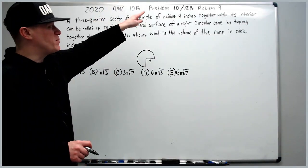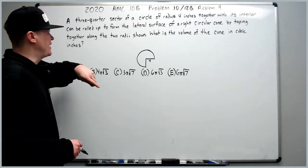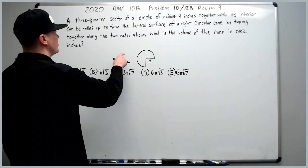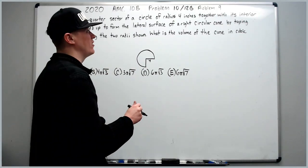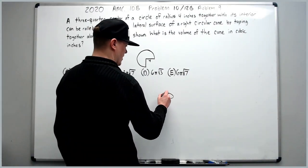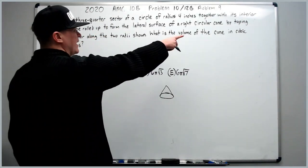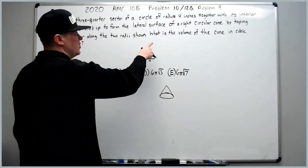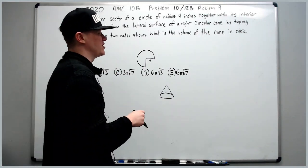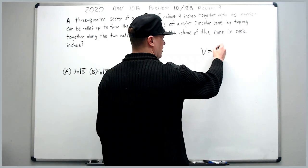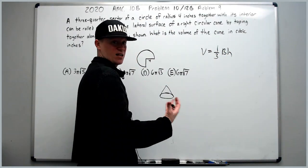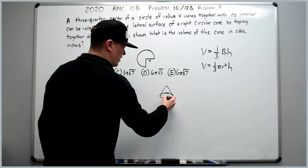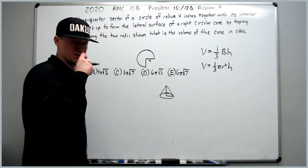All right. And now for the 2020 10B problem number 10. It was also the 12B problem 9. A three-quarter sector of a circle of radius 4 inches together with its interior can be rolled up to form the lateral surface area of a right circular cone. Let's draw something that looks like that so we can think about it. By taping together along the two radii shown, this one and this one are the only radii shown. What is the volume of the cone in cubic inches? Let's start accessing things we need to know. The volume of a cone is one-third area of the base times the height, the same as a pyramid. So we can make it one-third pi r squared h. So we're going to need the r and the h. How are we going to get those?